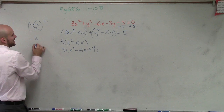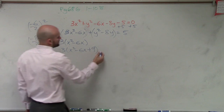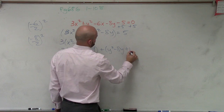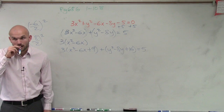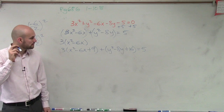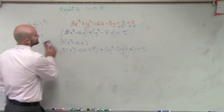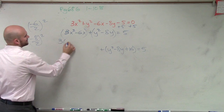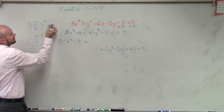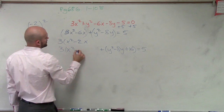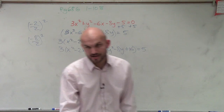For the y terms, I take my b, which is negative 8, divided by 2, and square it. Negative 8 divided by 2 is negative 4; negative 4 squared is 16. After a student correction, I factor out the 3 properly to get x squared minus 2x. So it's going to be 3 times x squared minus 2x plus 1. Now that makes better sense.